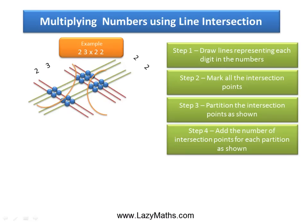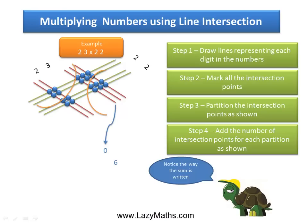Now we simply add the number of intersection points in each partition. So we have 6 intersection points here, so we write 06. We have 10 intersection points here, so we write 10.